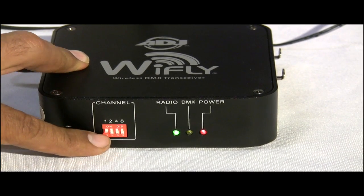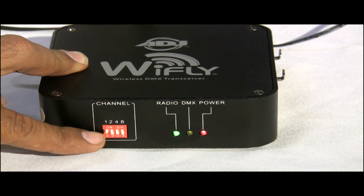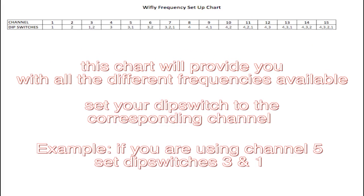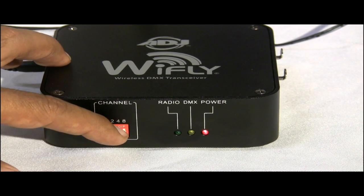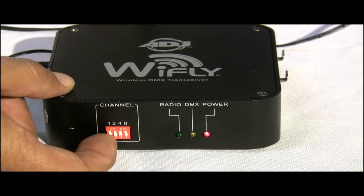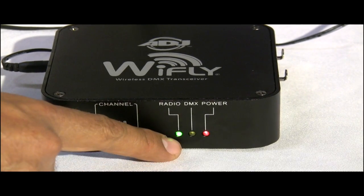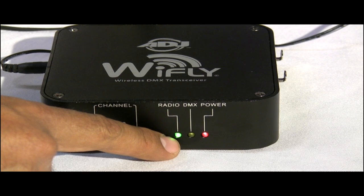For example, we have channel 1, which is pin 1. Here is the chart — it will provide you with all the different frequencies available. You will notice that when you turn on the correct frequency, the radio frequency indicator on the unit will turn green, which means it is communicating with your light or other transceivers.